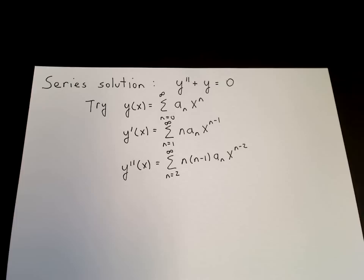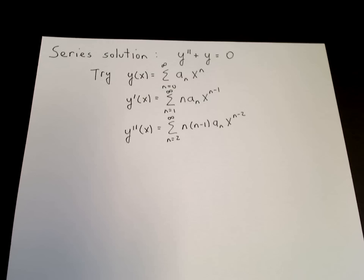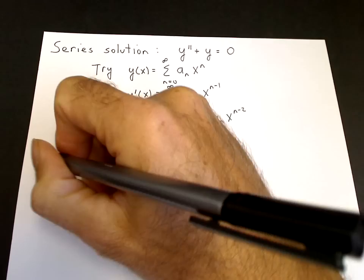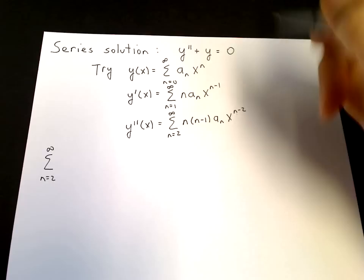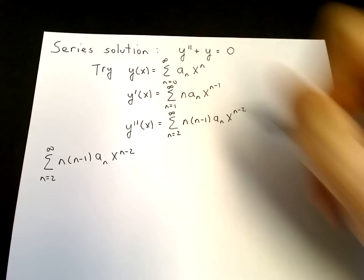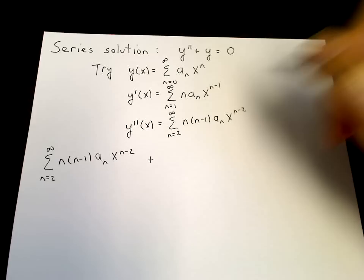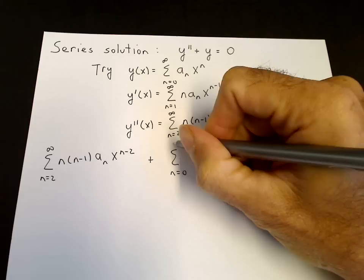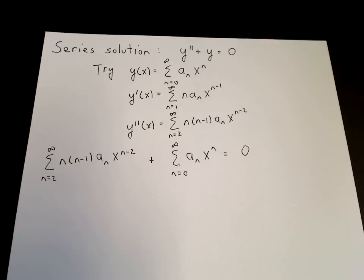We substitute into the differential equation. So y double prime plus y equals zero becomes the sum from n equals 2 to infinity of n times n minus 1 times a sub n times x to the n minus 2, plus the sum from n equals 0 to infinity of a sub n times x to the n, all equal to zero.